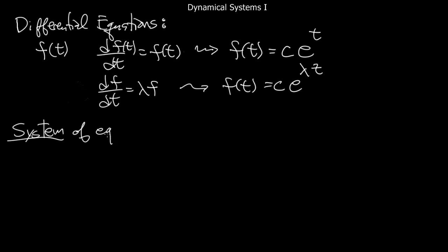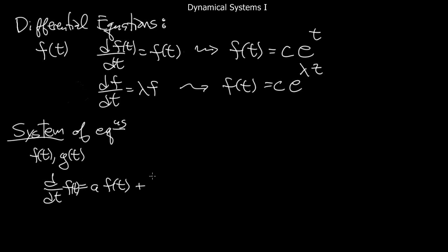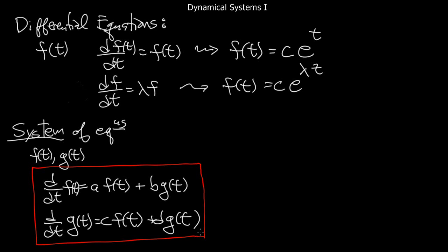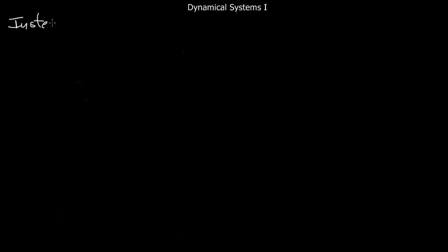What we're going to do a lot of is extending this to a system of equations. A typical example: you have two functions f(t) and g(t), and you ask them to satisfy: the derivative of f is a·f + b·g, and the derivative of g is c·f + d·g, where a, b, c, d are constants. These two functions are related — this is a coupled system of differential equations, and you have to solve for f and g together since the right-hand side involves both of them.